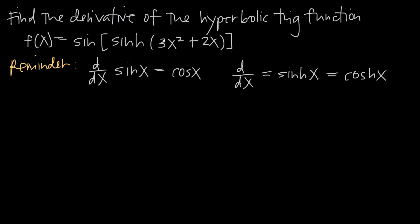We've got a couple things going on here. We're going to need to know — and we should have this memorized — the derivative of sine and the derivative of hyperbolic sine. We're also going to need to apply chain rule several times. Chain rule tells us to take the derivative of the outside function first, leaving the inside function completely alone, then multiply the result by the derivative of the inside function — a two-step process.